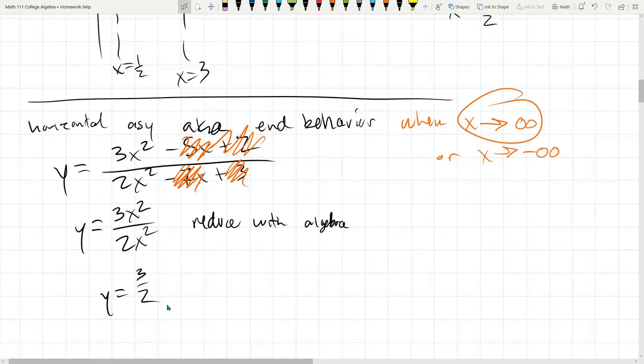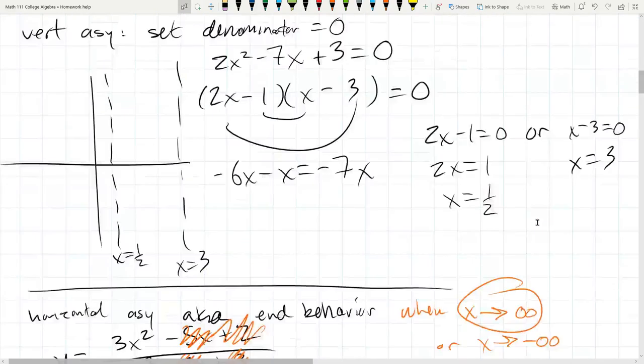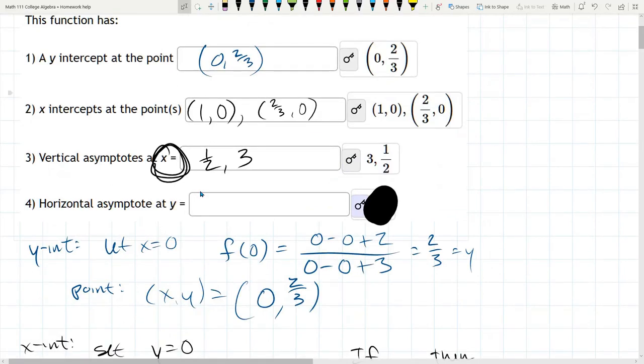This means when x is really big, y is 3 halves. So if you were to graph this out, when x is really big, meaning when we're way over on the right, y is 3 halves. So that would be 3 halves. We have a horizontal asymptote. And the function either approaches it from above or the function approaches it from below. But either way, our horizontal asymptote is y equals 3 halves. And they already have the y equals, so just put in the 3 halves.